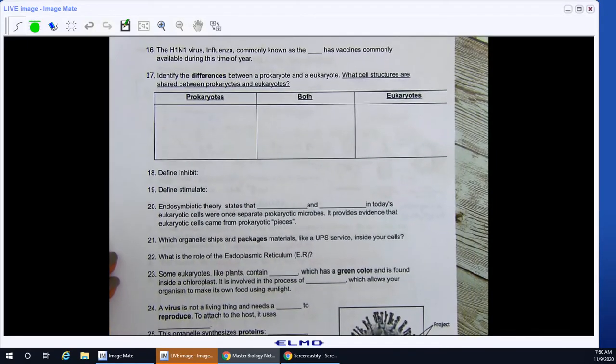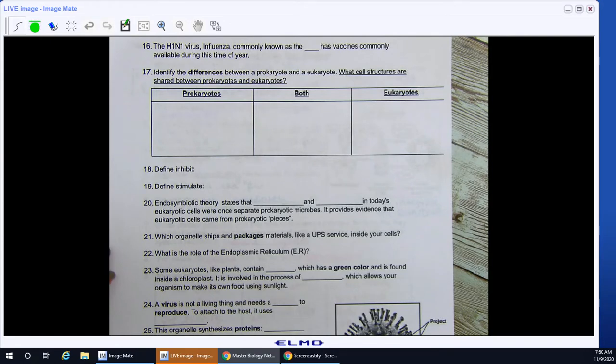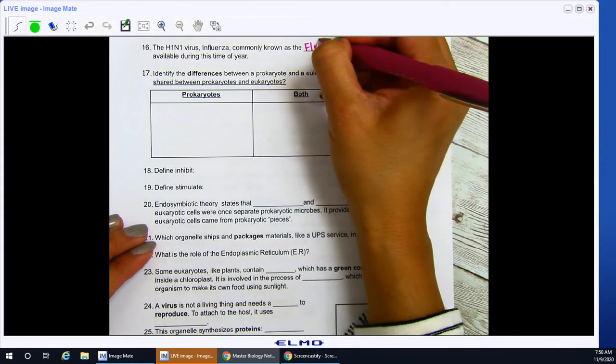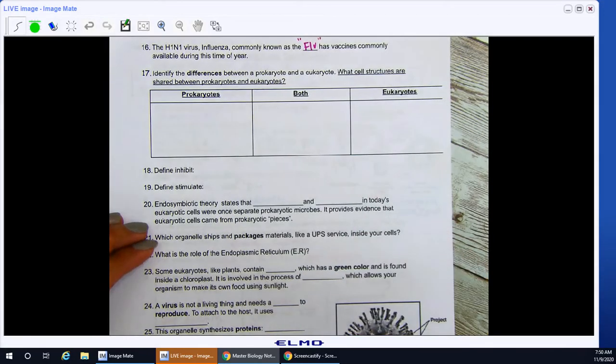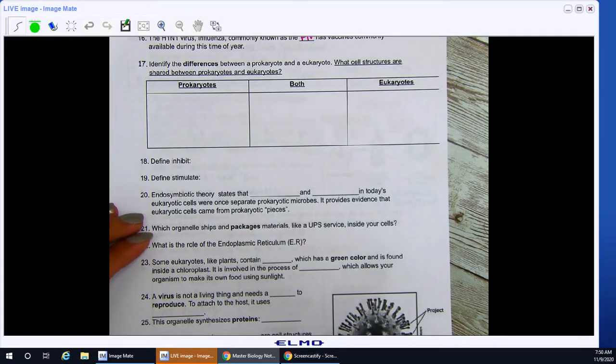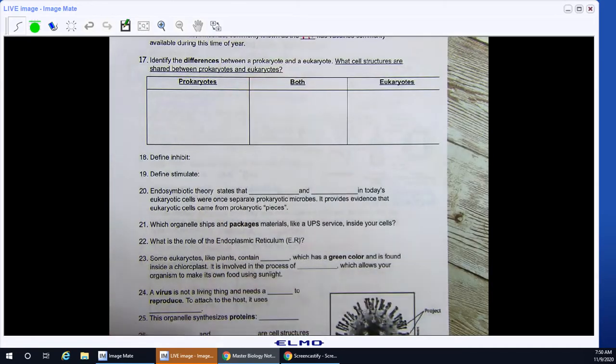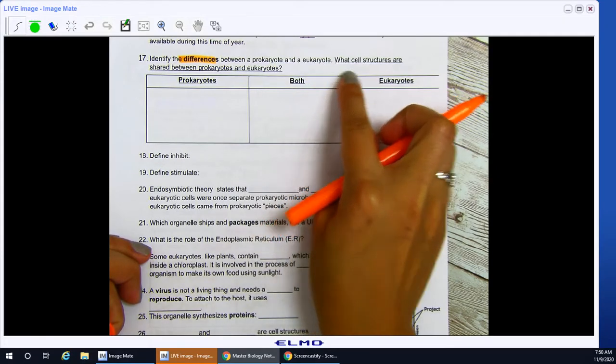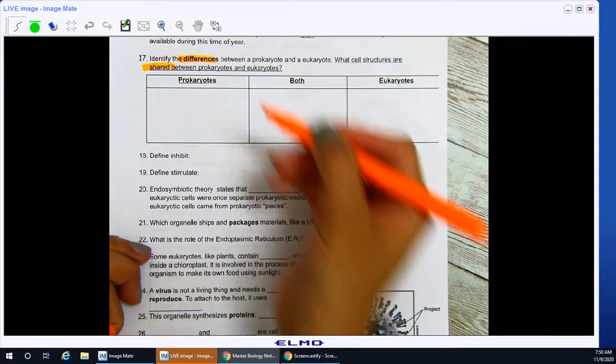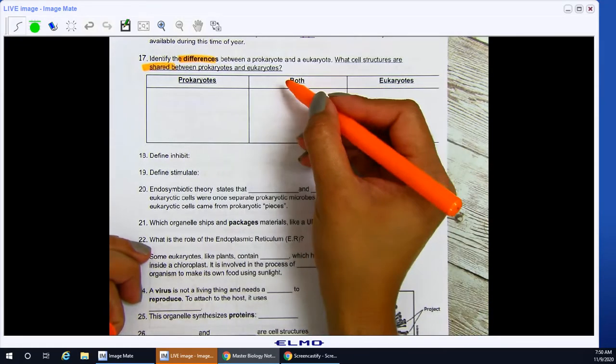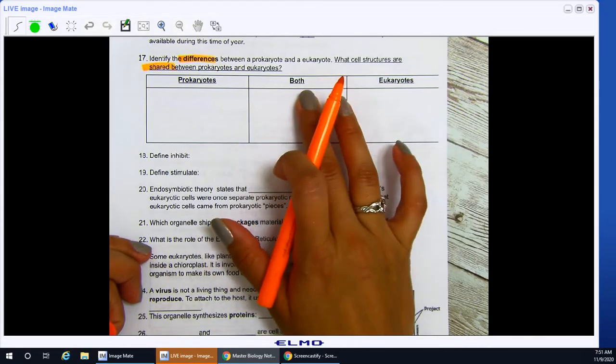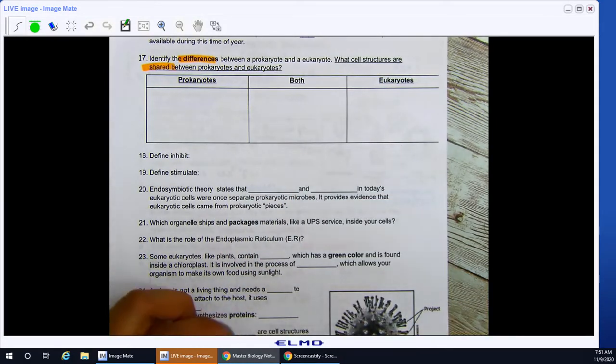Next page, 16, the H1N1 virus, influenza, commonly known as the blank, has vaccines commonly available during this time of year. This is the flu. 17, identify the differences. I'm going to go ahead and highlight that. I bolded it for you, but we're looking for differences between a pro and a ewe, and what cell structures are shared between prokaryotes and eukaryotes. So I want to look for differences in these two boxes, but I want to look at what they share in the middle. So this is like a Venn diagram.